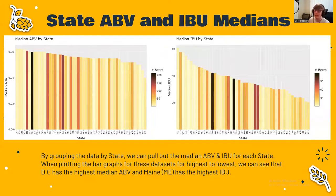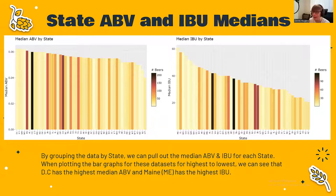Now let's look at my favorite graphs in the whole presentation: the median ABV and IBU by state. If you look at the legends, you'll see for the ABV the maximum number of beers is about 210, and the maximum number of IBU beers is about 130, which shows off what I showed in the previous slides — there are a lot more missing IBU values.